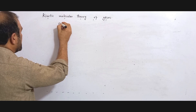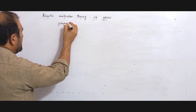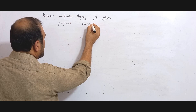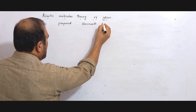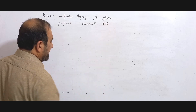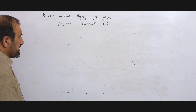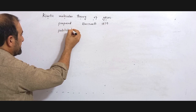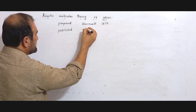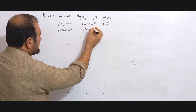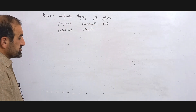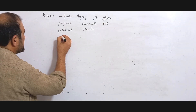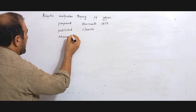This theory was first of all proposed by Daniel Bernoulli in 1738. The theory was later on published by Clausius, and it was further modified and developed by James Maxwell and Boltzmann.